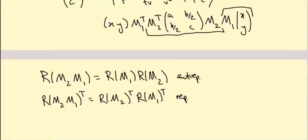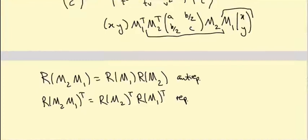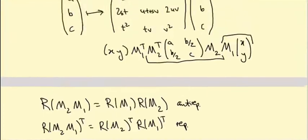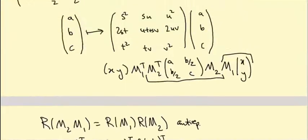Now I want to figure out the weights of this representation — figure out how the Lie algebra elements capital X, capital Y, and capital H act. Let's copy that 3×3 matrix and bring it down to work with.